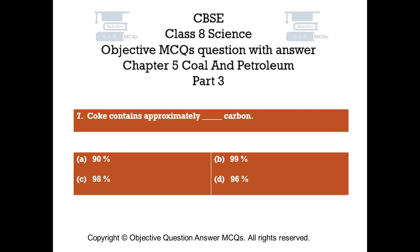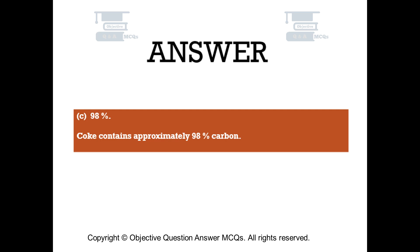Question number 7. Coke contains approximately how much carbon? Option A: 90%. Option B: 99%. Option C: 98%. Option D: 96%. The right answer is Option C, 98%. Coke contains approximately 98% carbon.